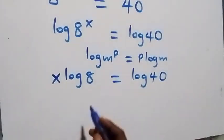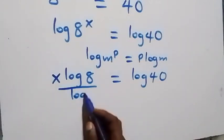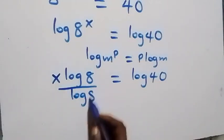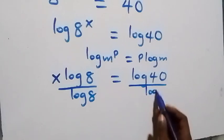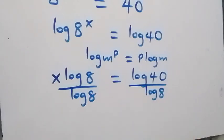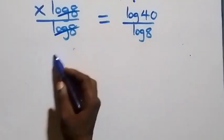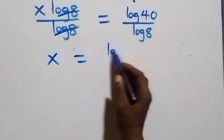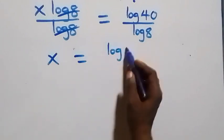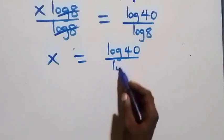The next step: we divide both sides by log 8. The log 8 terms cancel each other, and we have x equals log 40 over log 8.